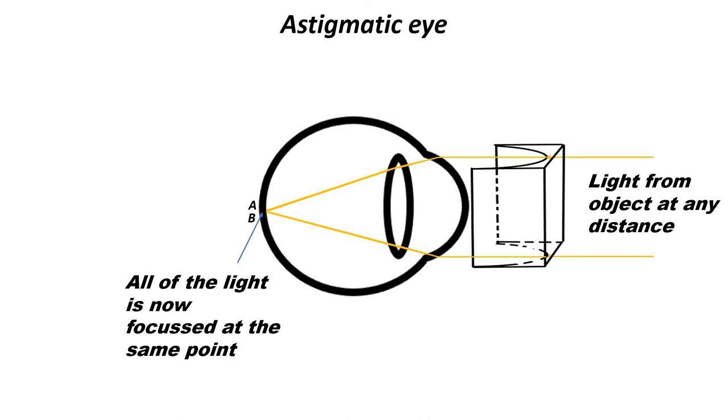All of the light entering the person's eye will then be focused onto the retina and they will be able to see clearly.